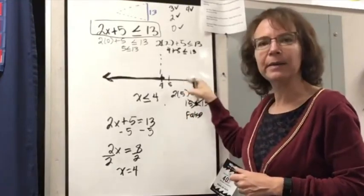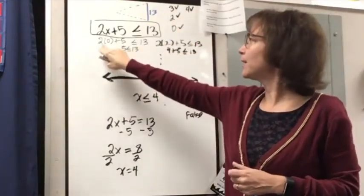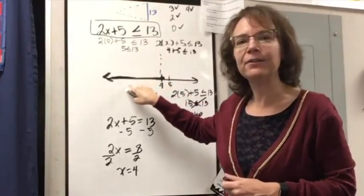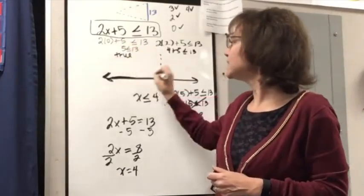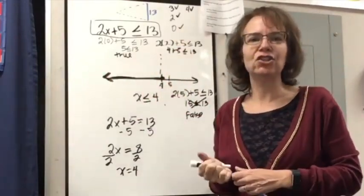So I know that's not part of my solution. Over here, when I tested something like 0, where I have 2 times 0 plus 5 is less than or equal to 13, I found that that was true. And so that is part of the solution, which is why this side of the boundary is shaded.